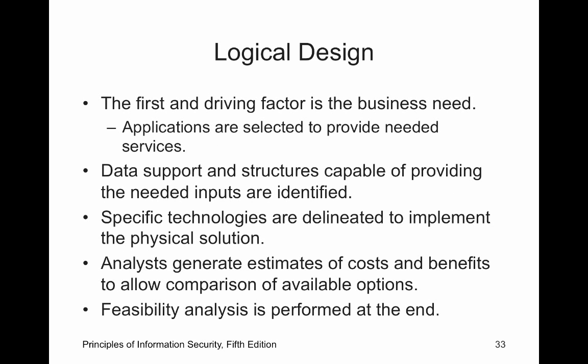Then we start the logical design. The first and driving factor is the business need — why didn't we upgrade the fiber optics at Rose State? The old one had no redundancy and some buildings weren't even connected. So it had to be redone. Specific technologies are delineated — we know we're going to run fiber optic to fix our connectivity between buildings. Feasibility analysis: we had to cut across parking lots with that fiber optic cable — could it be done? Yes.